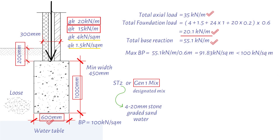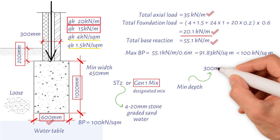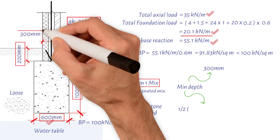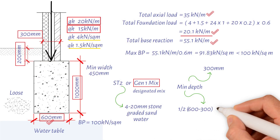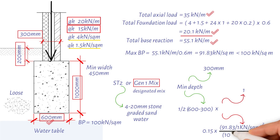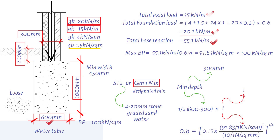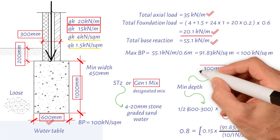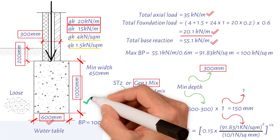Finally, we must determine the unreinforced foundation's minimum depth. The minimum depth of an unreinforced foundation equals either the maximum value of 300 millimeters, or half the width of the footing (0.6 meters) minus load width (0.3 meters), multiplied by either of these maximum values. As a result, the minimum unreinforced footing depth is exceeded.